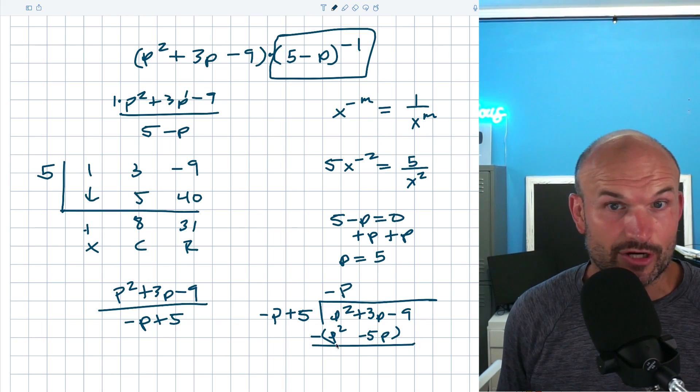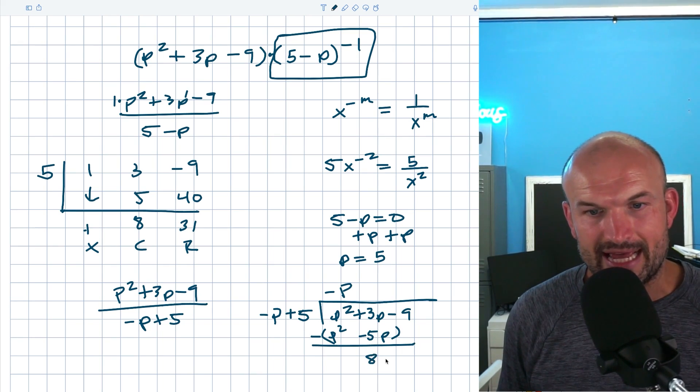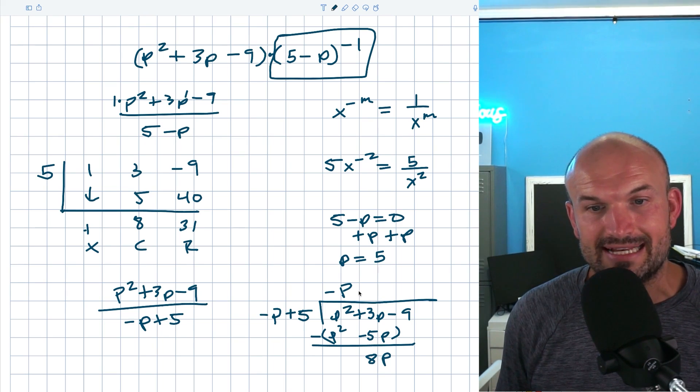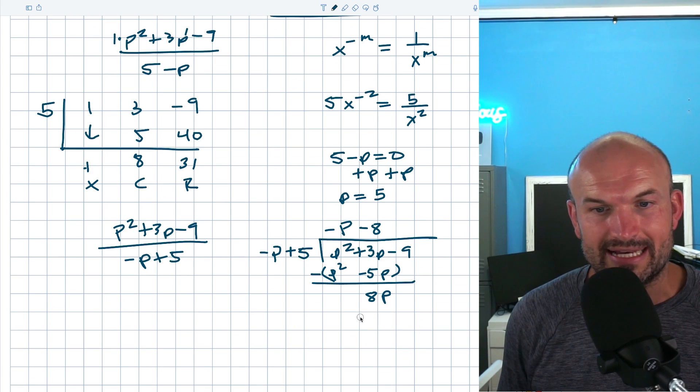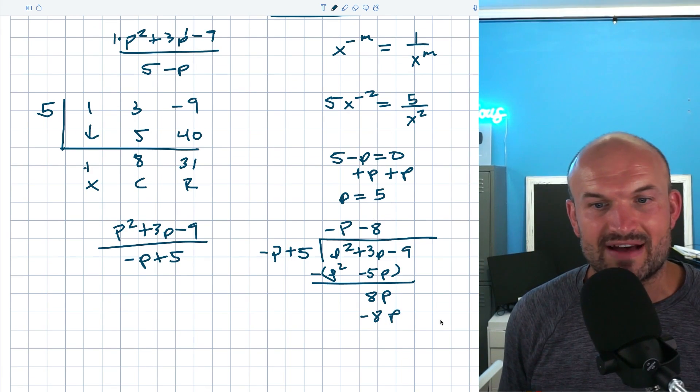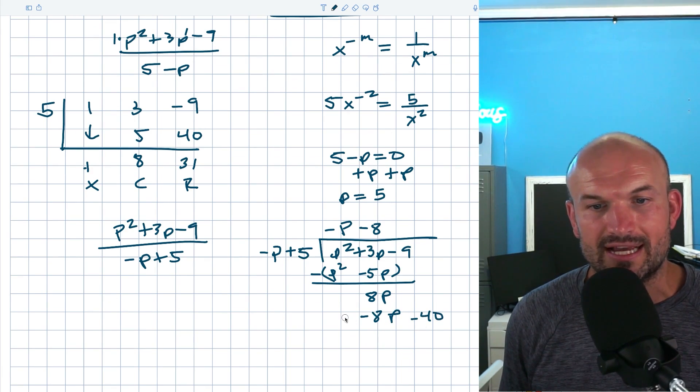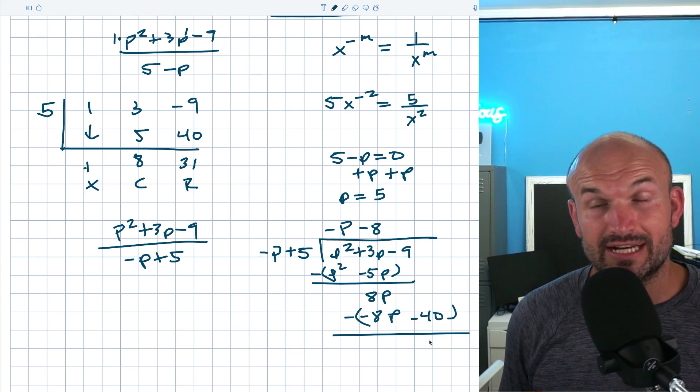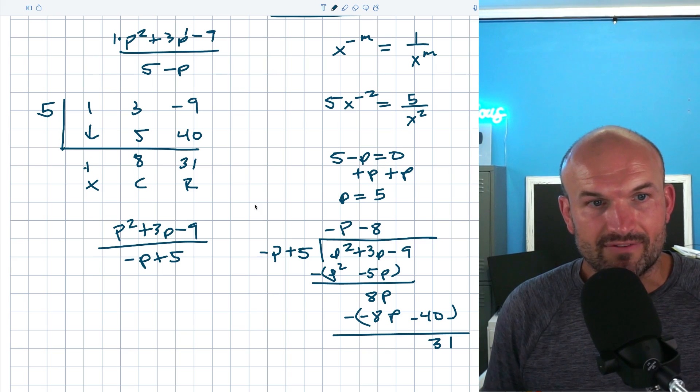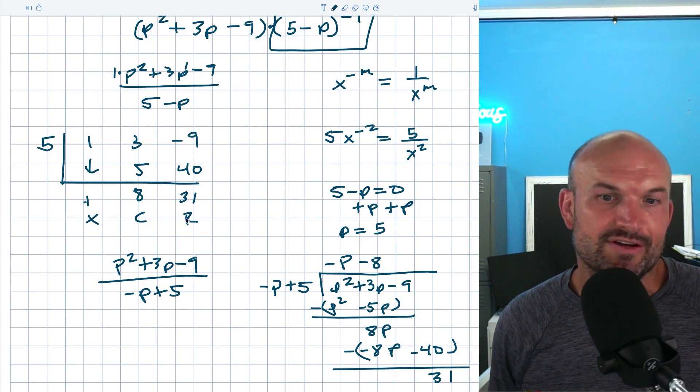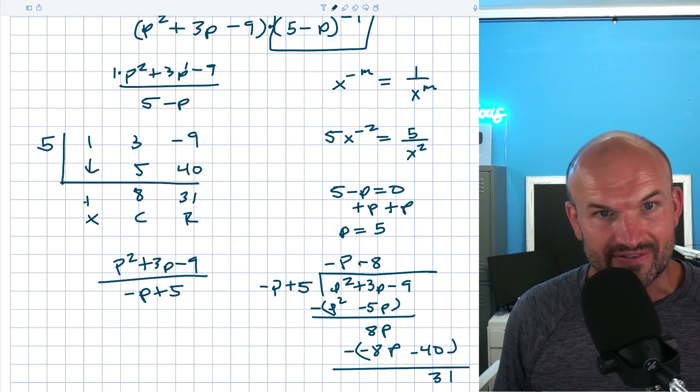And therefore, that's going to give me 0p squared. And this is going to give me a positive 8p. Negative p divides into 8p a negative 8 times. Negative 8 times negative p is going to be positive 8p. Negative 8 times 5 is going to be a negative 40. Again, subtract your rows. What you're going to get here is a positive 31. So basically, we've got the exact same answers, but these are negative and this one is positive.